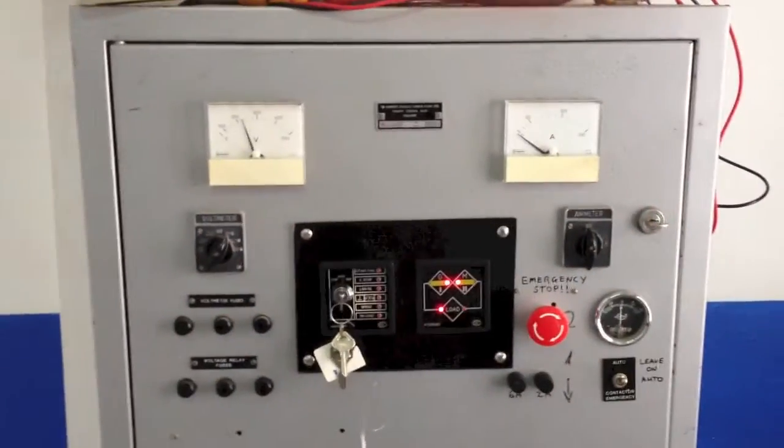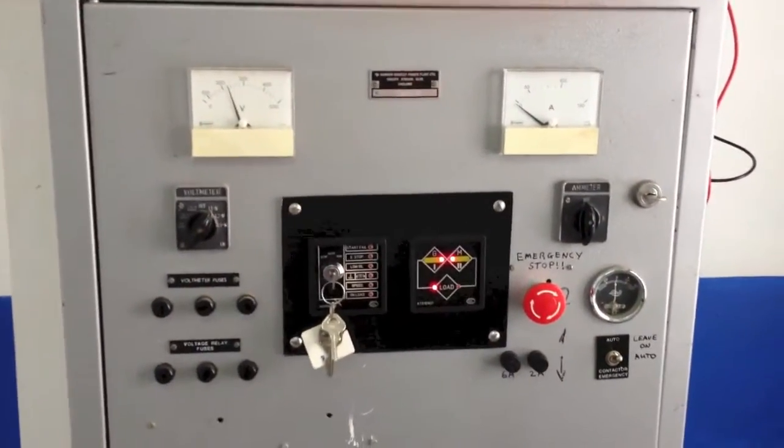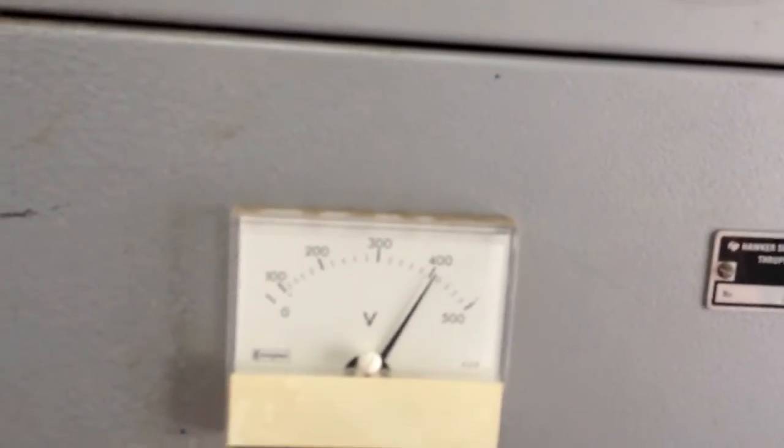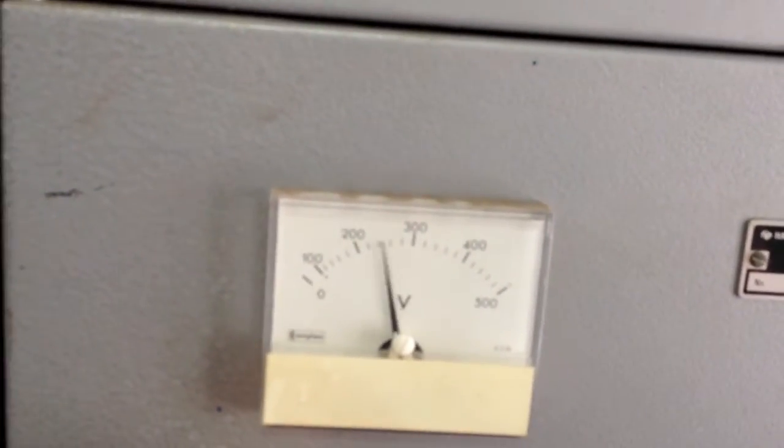Here we go. I'm now running the generator at the moment. This voltmeter is strictly for the generator. So you can see we have three phase on all phases and plus we have 220.